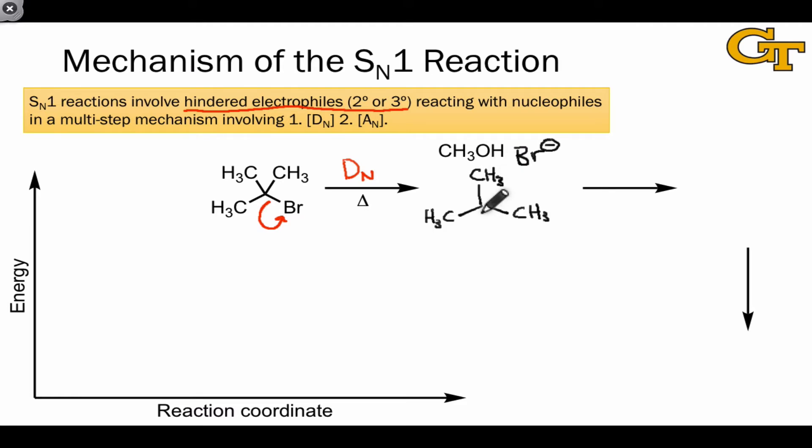The carbocation contains a carbon atom bearing only six electrons and thus a formal positive charge. Because this carbon is deficient with respect to the octet rule, it's a strong electrophile, and the carbocation is a key intermediate in SN1 reactions.